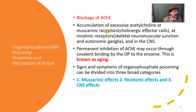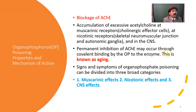At the muscarinic receptor — the cholinergic effector site — at the nicotinic receptor at the neuromuscular junction and autonomic ganglia, and in the CNS, we get three types of signs and symptoms: muscarinic overactivity, nicotinic overactivity, and CNS action. Permanent inhibition of acetylcholine esterase may occur through covalent binding by the organophosphate to the enzyme, known as aging.